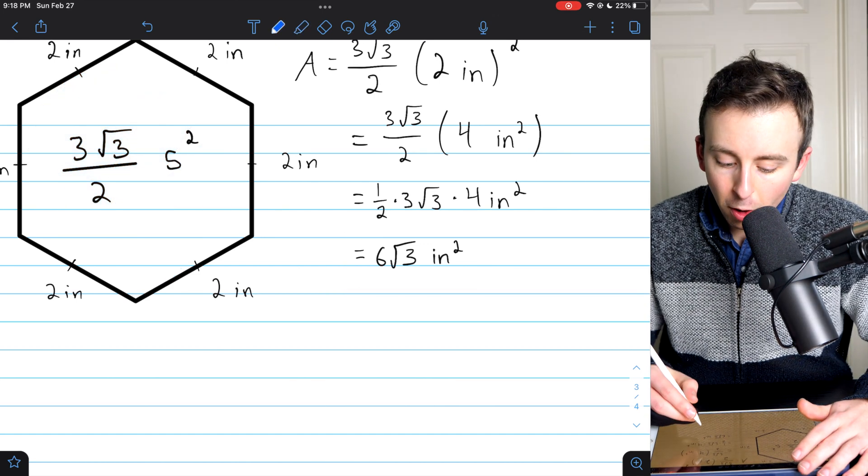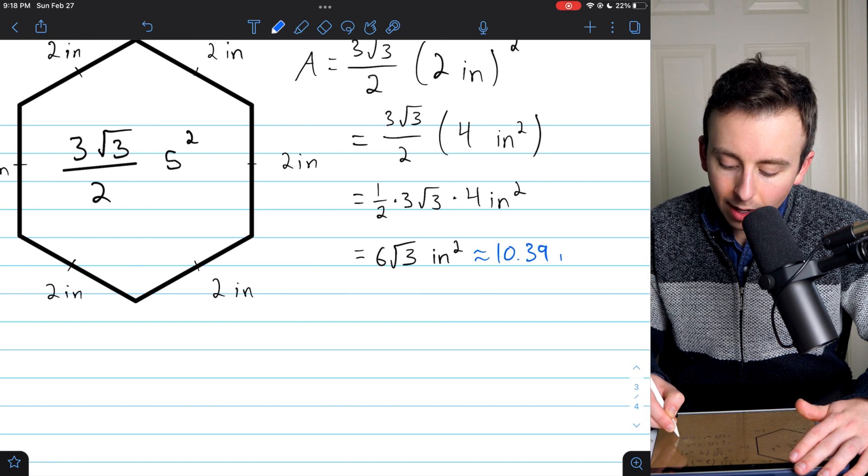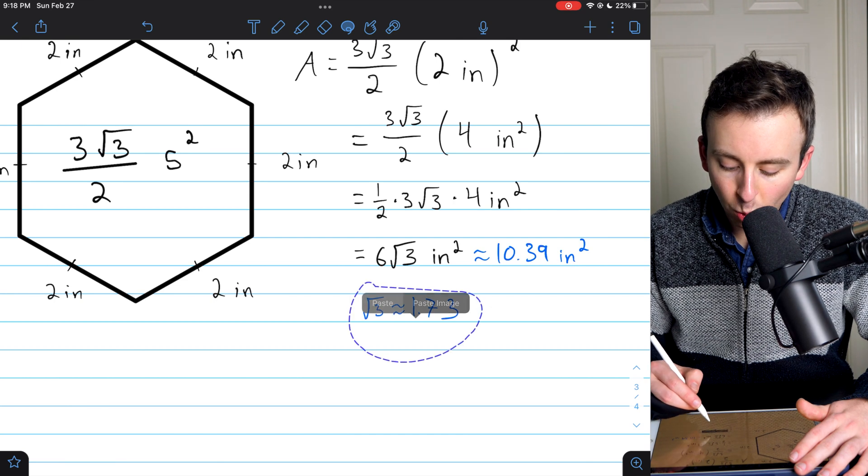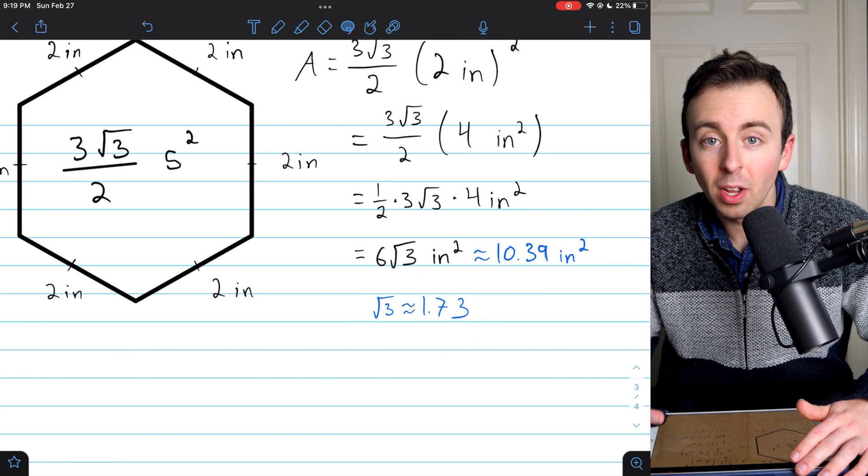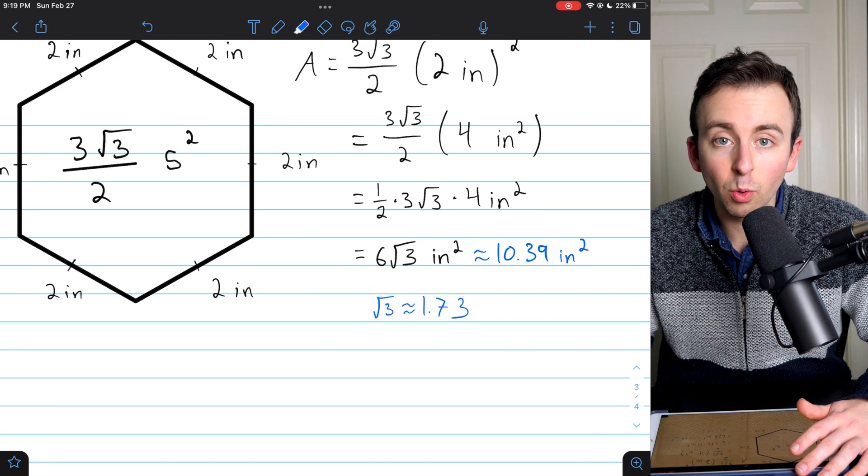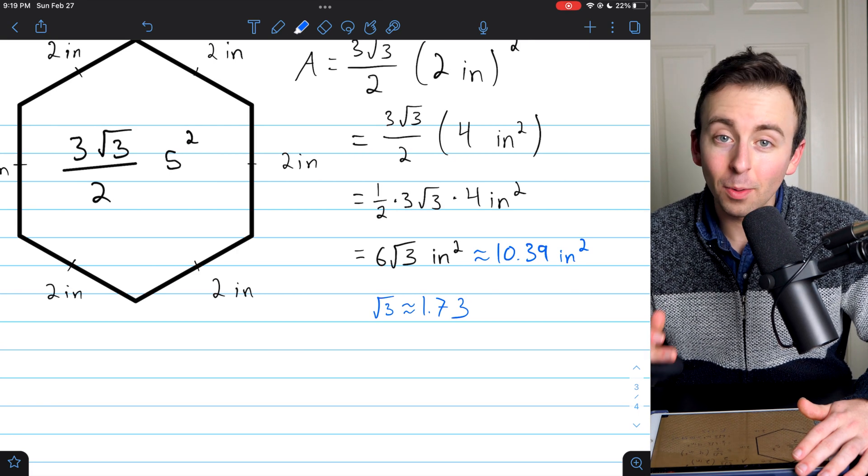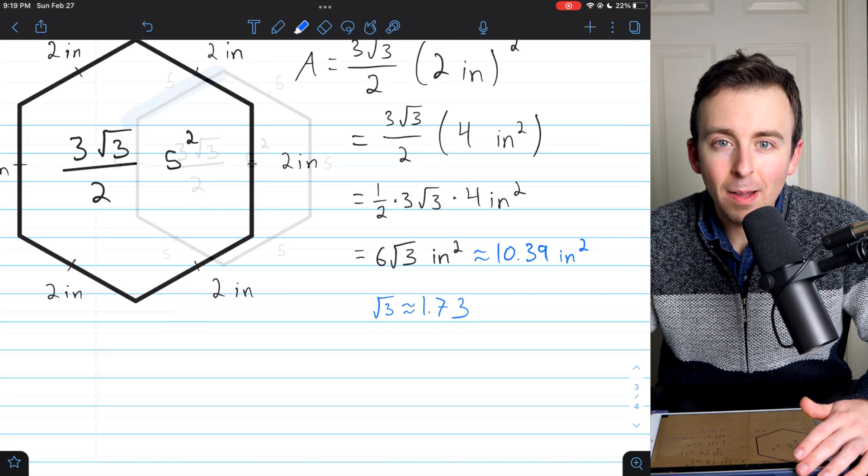If you prefer approximations, this is about 10.39 square inches. If you weren't aware, square root of three is about 1.73. So if you don't have a square root button, you could use that. But really, if you don't have a square root button, what you need is a new calculator. So that's how you calculate the area of a regular hexagon. Let's do one more example.